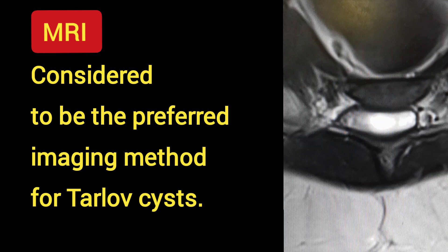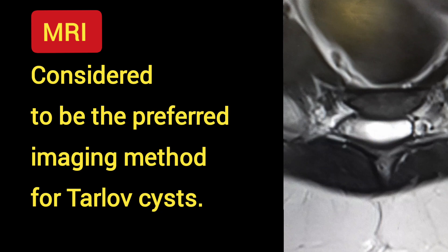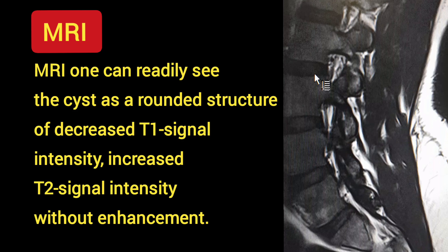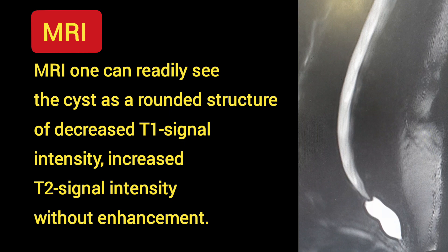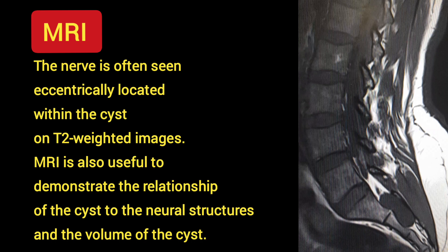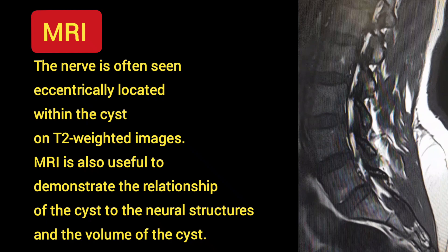Magnetic resonance imaging is considered to be the preferred imaging method for Tarlov cysts. With MRI, one can readily see the cyst as a rounded structure of decreased T1 signal intensity and increased T2 signal intensity without enhancement. The nerve is often seen eccentrically located within the cyst on T2-weighted images. MRI is also useful to demonstrate the relationship of the cyst to the neural structures and the volume of the cyst.